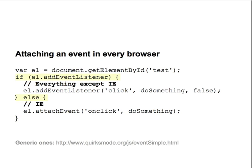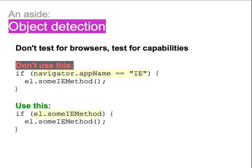In this event attachment code, we're using a conditional statement to determine whether to use the standard method or the Internet Explorer-specific method. Notice how we're not specifically checking for the name of the browser — that's called object detection, and it's a really good idea. Instead of checking the name of the browser and then using a method that you know works today, you can check to see if the method you want to use actually exists on the object in question. This is a good idea because the capabilities of browsers may change over time. If IE13 is released someday and suddenly supports the standard method, but your old JavaScript code checks for the name IE, your code is going to break. Doing object detection instead of browser detection makes it more likely that your code will continue to work as new browsers are released.